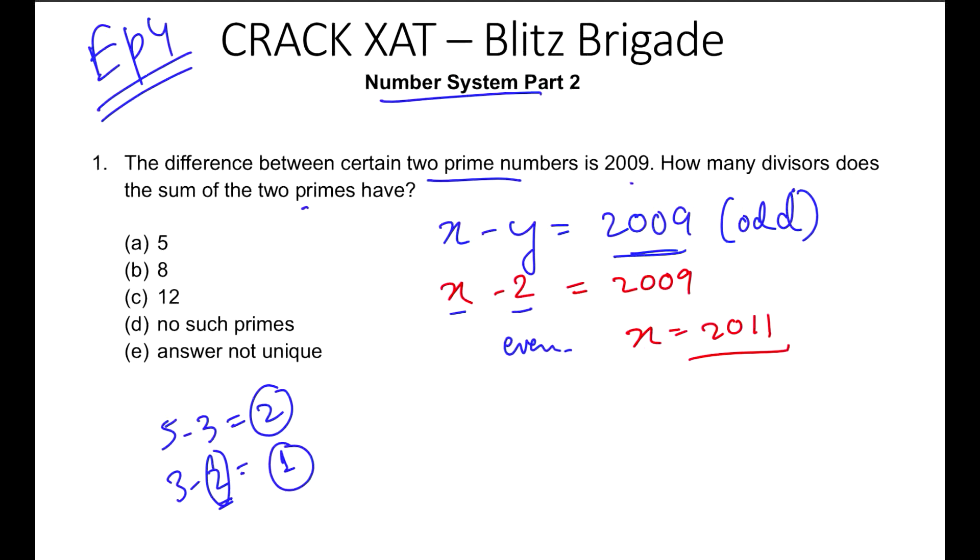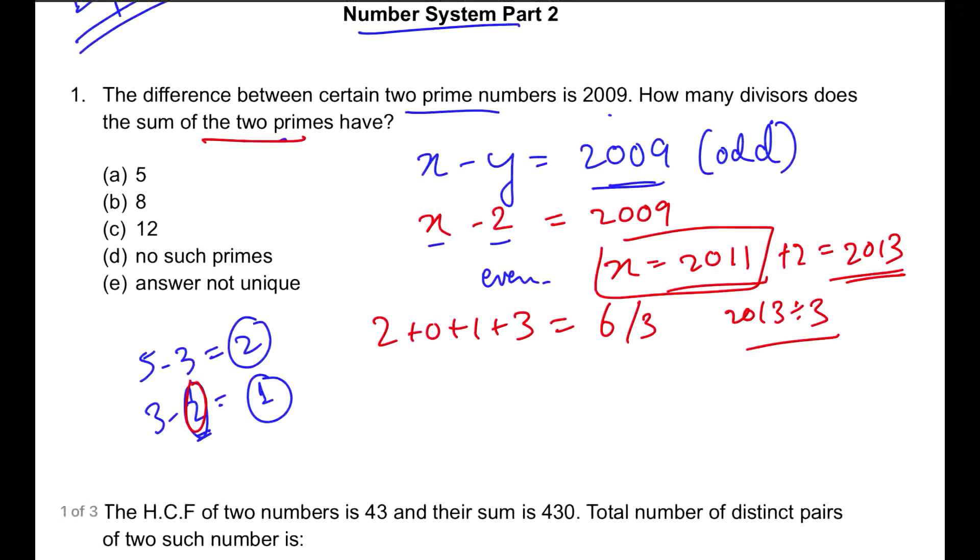Till this, I hope everyone understood. This question's learning is that the difference can be odd only when we have an even prime number, which is only 2. Now when we got the other number which is 2011, I need the sum of the two primes, which is 2013. If you observe, the divisibility rule of 3 says add the digits: 2+0+1+3=6, divisible by 3, so the entire number is divisible by 3.